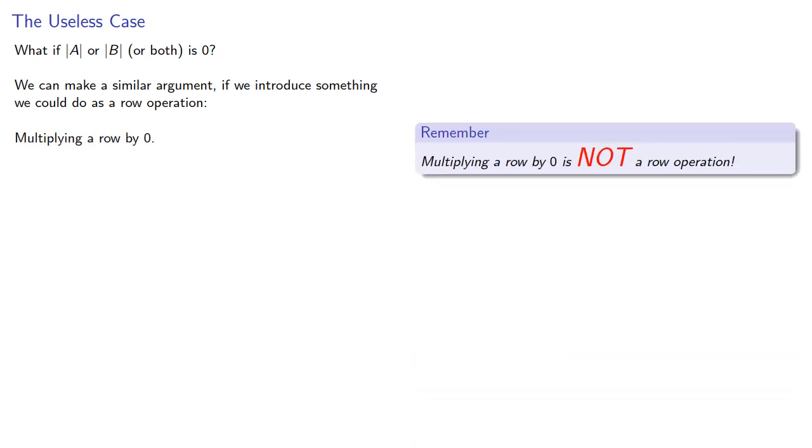What if the determinant of A or B, or both, is 0? We can make a similar argument if we introduce something we could do as a row operation, multiplying a row by 0. Now remember, multiplying a row by 0 is not a row operation, but if we allow that, let's leave that as a homework problem.